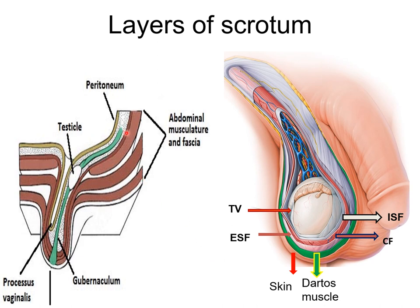The layers of the scrotum correspond to those of the anterior abdominal wall. The outermost layer is the skin. Deep to that, instead of superficial fascia, there is the dartos muscle. Next, instead of the external oblique muscle, there is the external spermatic fascia. Then, instead of the internal oblique muscle, there is the cremasteric fascia with cremasteric muscle. Deeper still is the internal spermatic fascia, derived from the fascia transversalis. The deepest layer is the tunica vaginalis, a fold of peritoneum that descended in front of the testis as it descended from the abdominal cavity to the scrotum.